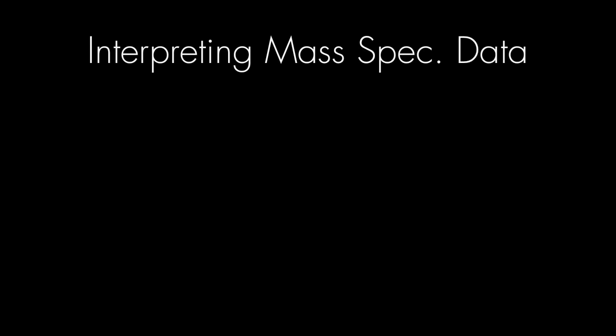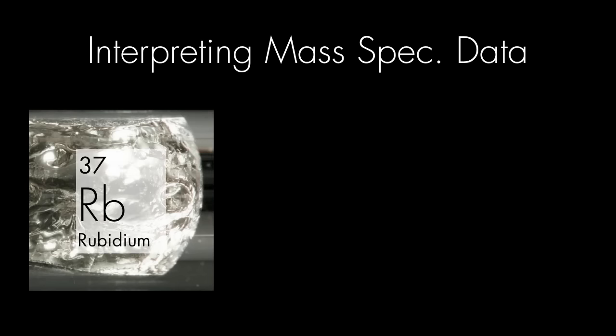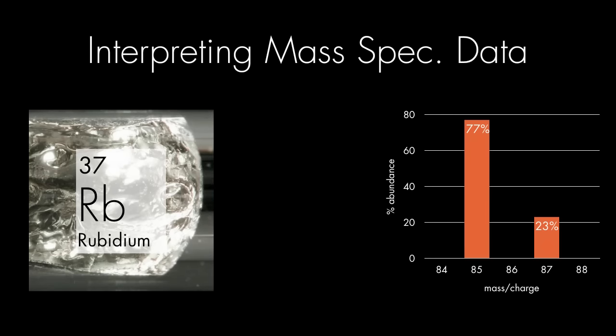So, how do we interpret mass spectrometer data? Let's consider rubidium for an example. Here's some mass spectrometer data from a natural sample of rubidium. It tells us that 70% of this sample of rubidium was the rubidium-85 isotope, while the rest was the rubidium-87 isotope.